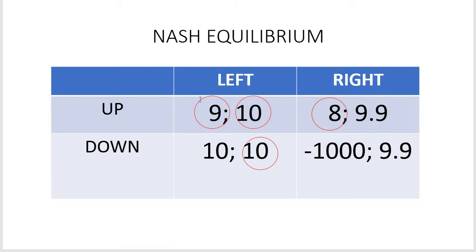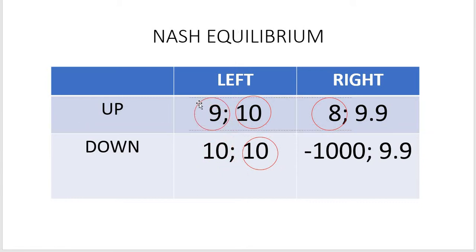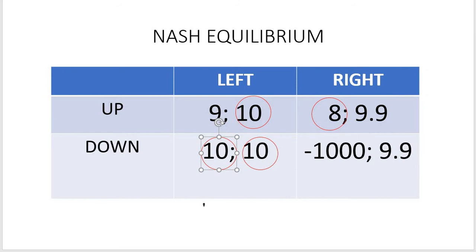So this is the key issue: down-left should be the Nash equilibrium solution of this game, yet in real life we end up with up-left. This makes the status of Nash equilibrium questionable — perhaps we shouldn't use Nash equilibrium as the game solution concept.